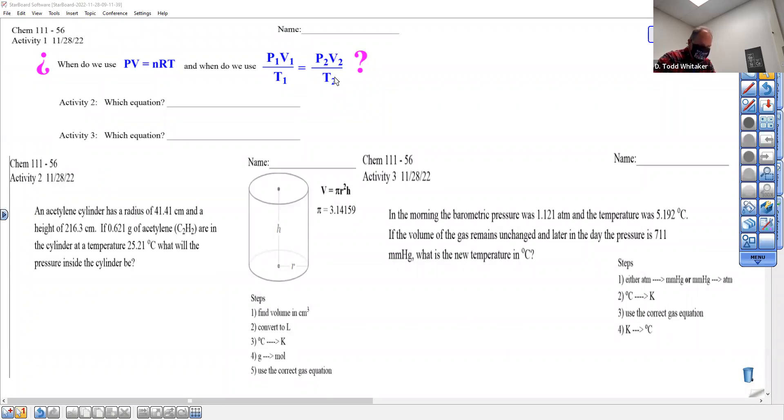So if we can identify if we have changing conditions, then we're going to use this one. And if we have just one set of conditions, then we're going to use this one. So let's see which each activity has, and then quickly do activity one. It's going to be real quick.